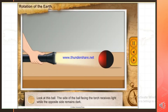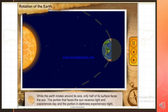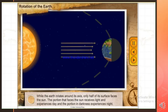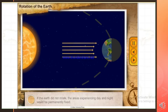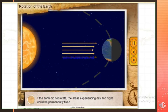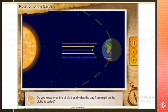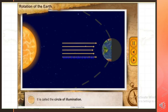Look at this ball. The side of the ball facing the torch receives light, while the opposite side remains dark. While the Earth rotates around its axis, only half of its surface faces the Sun. The portion that faces the Sun receives light and experiences day, and the portion in darkness experiences night. If the Earth did not rotate, the areas experiencing day and night would be permanently fixed. The circle that divides the day from night on the globe is called the Circle of Illumination.